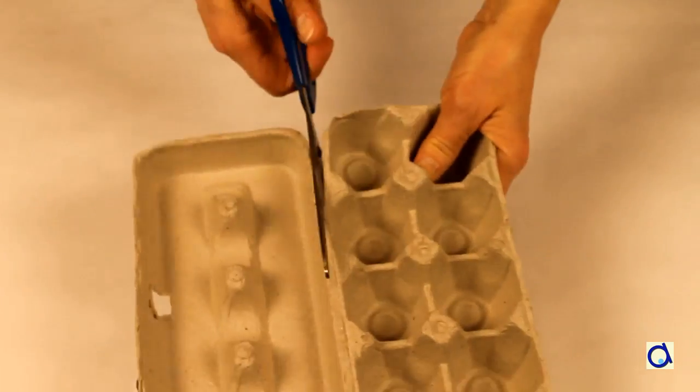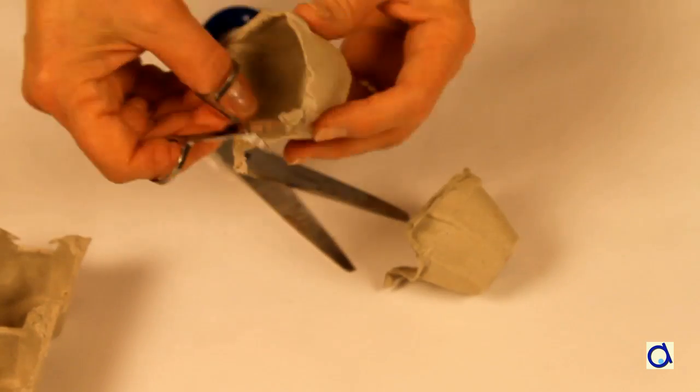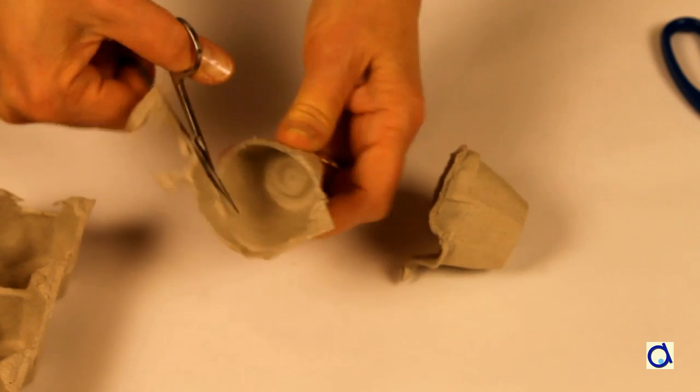For one bell you will need to cut one cell of an egg carton. Begin by separating a cell of the egg carton with big scissors and then trim the edge with small scissors to make a little cup.